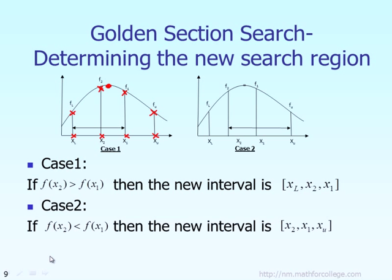Look carefully at those four points: the lower bound is here, the upper bound is here, f2 is here, and f1 is here. The pattern from the lower bound to f2 goes up, then from f2 to f1 the value goes down. When the pattern changes like that — up then down — this point should be the new upper bound.